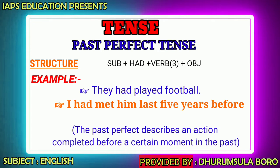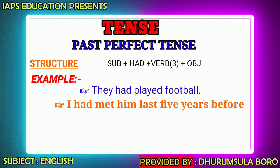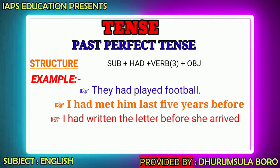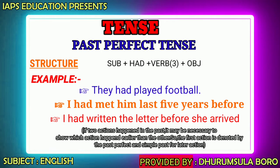The past perfect tense describes an action completed before a certain moment in the past. For example: 'I had written the letter before she arrived.' Here there are two past actions — one action happened earlier and the other happened later.